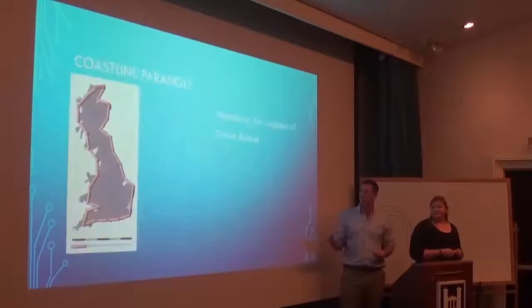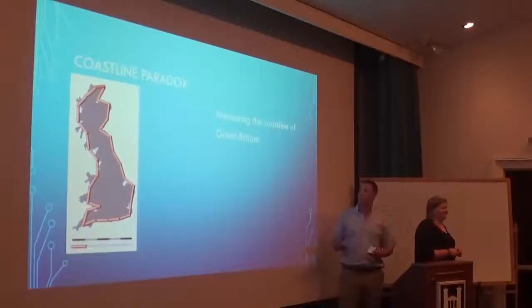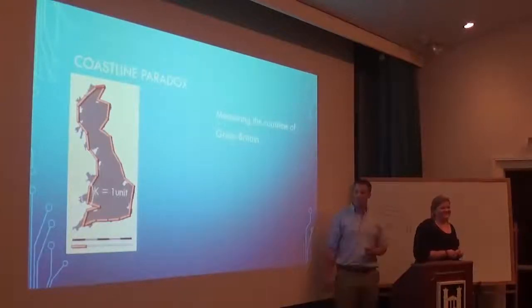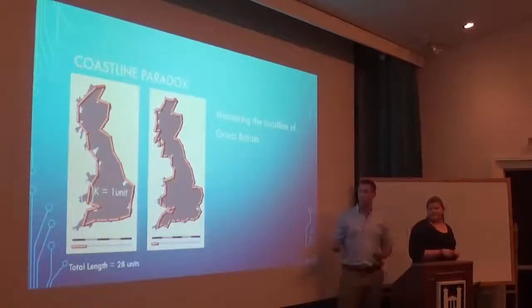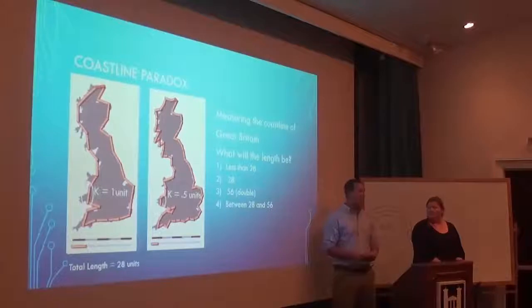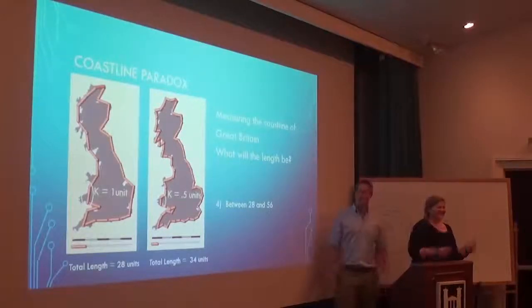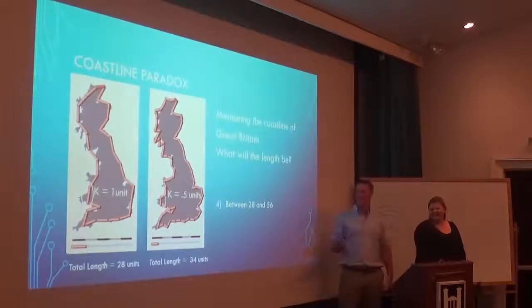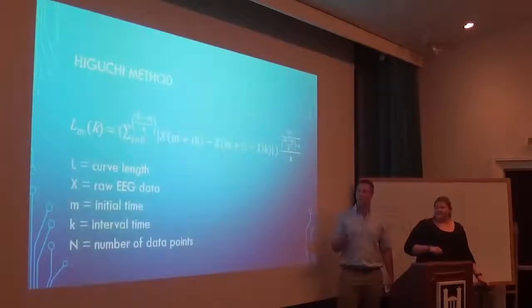Now let's look at the coastline paradox, and how fractal dimensions relate to the data we analyzed. If you attempt to measure the coastline of Great Britain using a ruler K of one unit, you find a total length of 28 units. If you re-measure using K of 0.5 units — half the original ruler — the new total length will be between the original and double that length. This shows that as you decrease the size of your ruler, you increase the total length of the coastline.